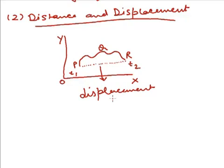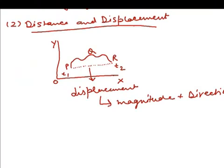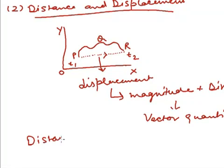Displacement of the object has both magnitude and direction. Since the displacement of the object has both magnitude and direction it is a vector quantity. Magnitude of a displacement vector is equal to the length of a straight line joining initial and final position and its direction points from the initial position of the object towards the final position of the object. In contrast to displacement, distance is a scalar quantity.